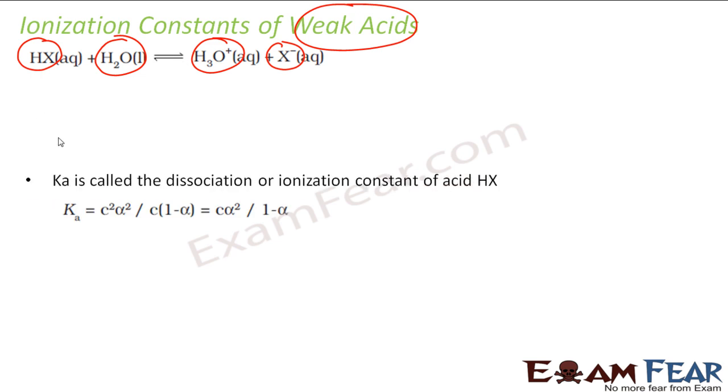And Ka is called the dissociation or ionization constant of the weak acid.